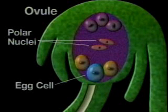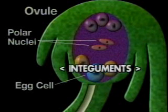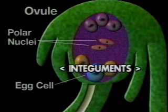Further inside the ovary, the walls of the ovule, called integuments, begin to form a seed coat around the developing embryo and the endosperm.